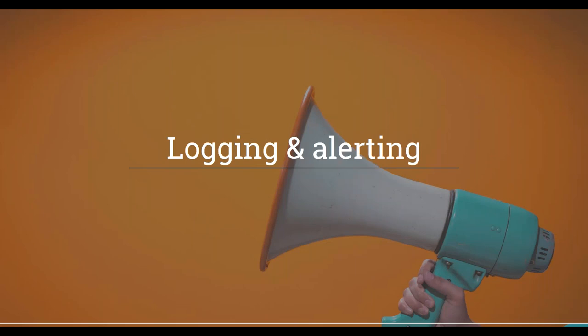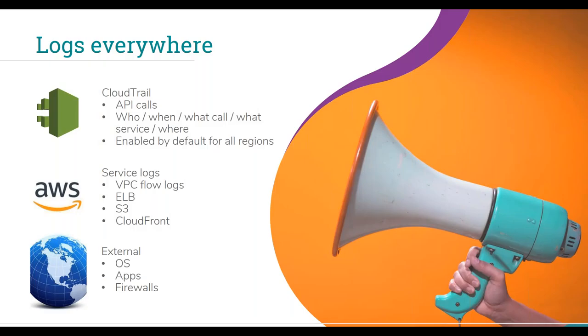Let's take a look at logging and alerting. This is often neglected and often an afterthought — of course it's really important for troubleshooting and diagnostics but also to drive that detection and response capability. You may also be obliged through compliance to take it seriously. We have logs all over the place in AWS. CloudTrail potentially deserves a section in its own right — it's effectively a log of every API request that is made.